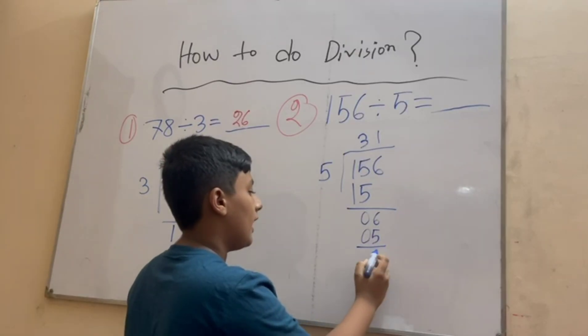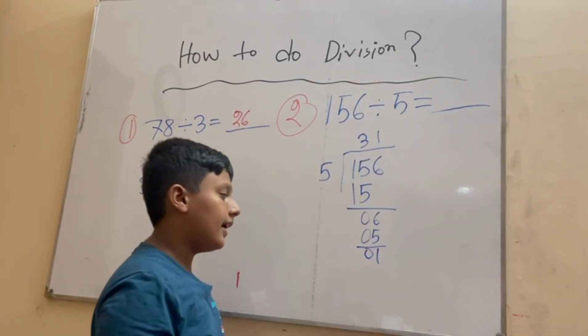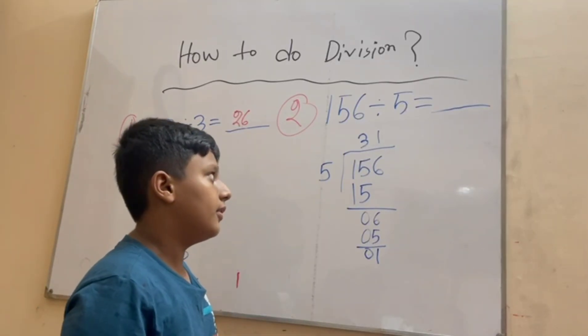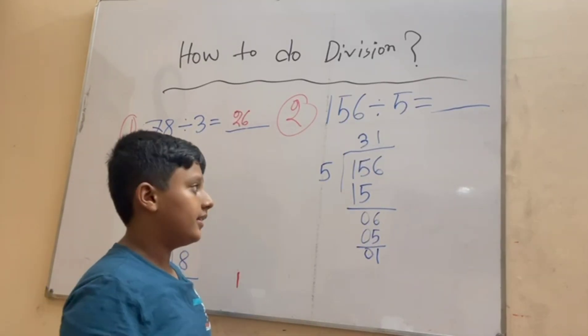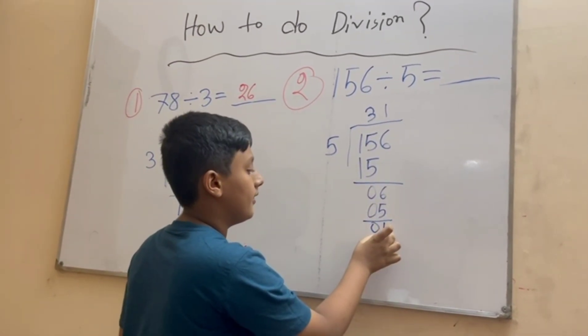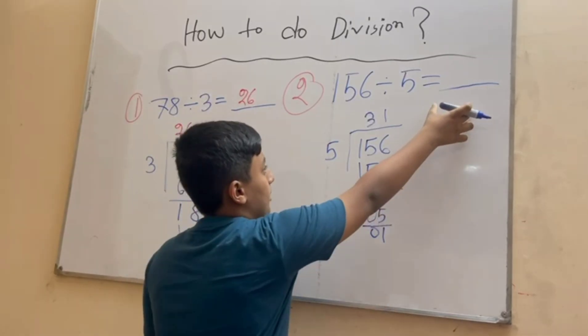Six minus five is equal to one. And now we can't divide one by five, so we have got our answer. The answer is 31 and the remaining number is one. Now how will we write it in the answer?